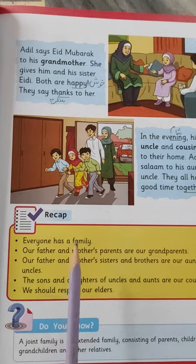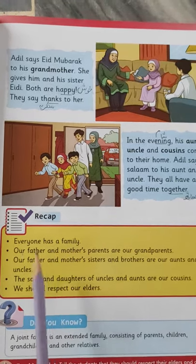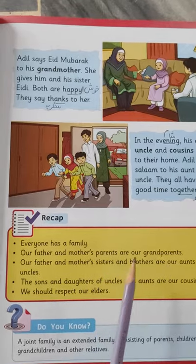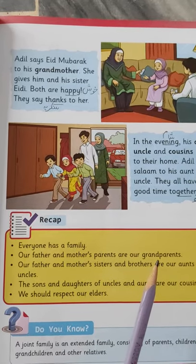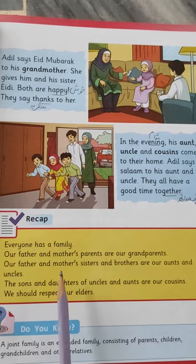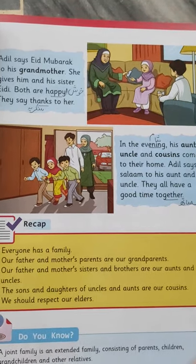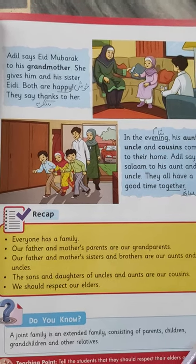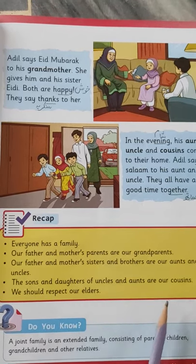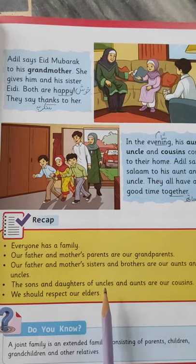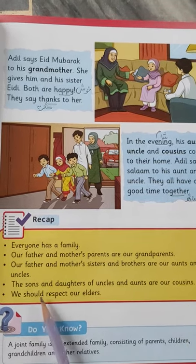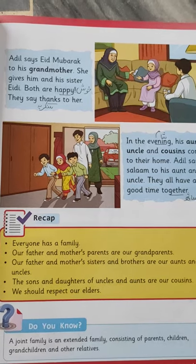Everyone has a family — ہر ایک کا خاندان ہوتا ہے. Our father and mother's parents are our grandparents — ہمارے امی ابو کے امی ابو ہمارے دادا دادی اور نانا نانی ہیں. Our father and mother's sister and brother are our aunt and uncle — ہمارے امی ابو کے بہن بھائی ہمارے چچا چچی اور مامو ممانی ہیں. The sons and daughters of uncles and aunts are our cousins — ہمارے چچا چچی یا مامو ممانی کے بیٹے بیٹیاں ہمارے cousins ہیں. We should respect our elders — اور ہمیں اپنے بڑوں کی عزت کرنی چاہیے.